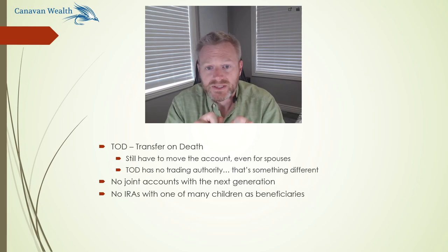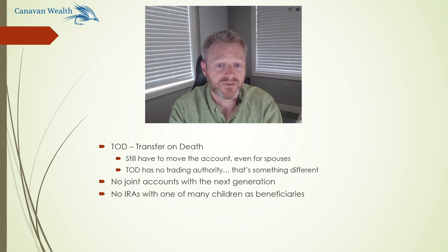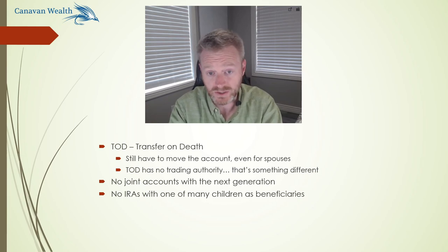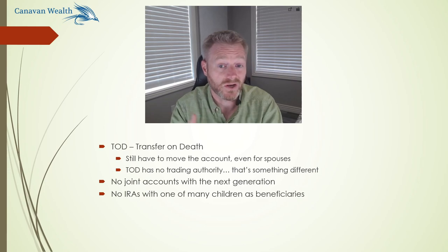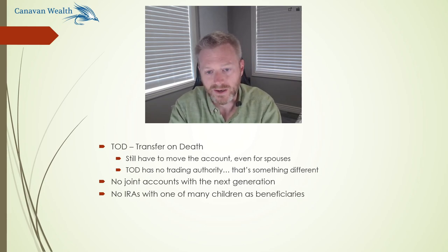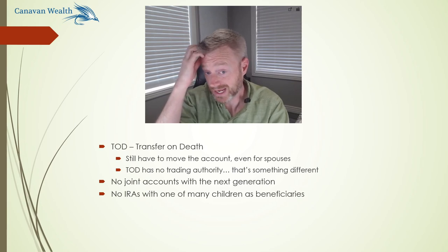It's also important to remember that TOD accounts and trading authority are very different. A TOD specifies who is going to gain control of the account upon your passing, and that happens relatively quickly — but those people have no access to your account prior to you passing. If your TOD beneficiary calls me and says, 'Hey, how much is in dad's account?' I can't tell them that. If they call and say, 'Dad wants to sell this and buy that,' or 'Can you send dad $10,000?' I can't do that. I have to talk to dad.